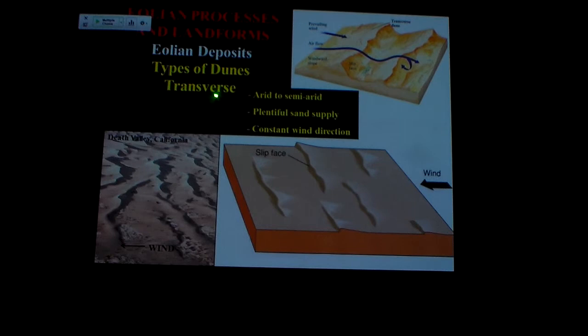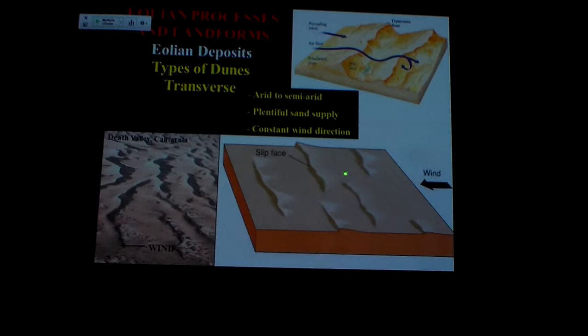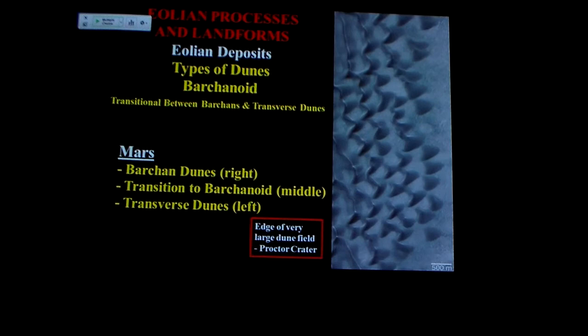If I had more sand out there, I'd get something called a transverse dune. Now instead of just a mound where the ends can blow down forming horns, I've got a continuous ridge extending at 90 degrees to the wind direction. Notice there is a gentle upwind side and a steep downwind or lee slope. The material is moving over and deposited down in back of the dune on the lee side, so these are all moving downwind as they migrate. You can see the gentle upwind side and the steep lee side here. So we know in Death Valley the wind is blowing from right to left in that picture, and there's more sand than in a barchan situation.